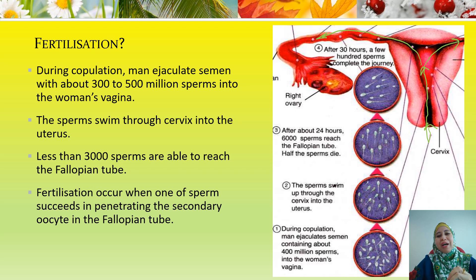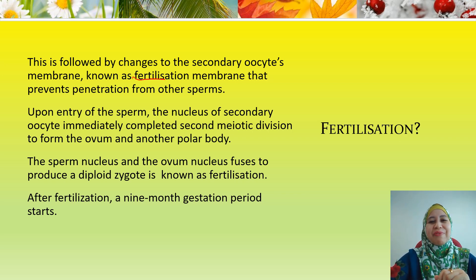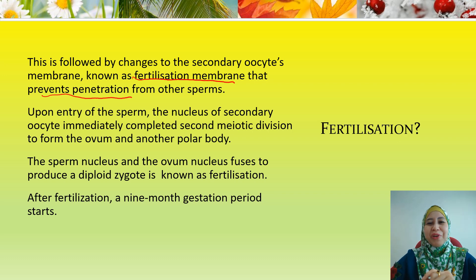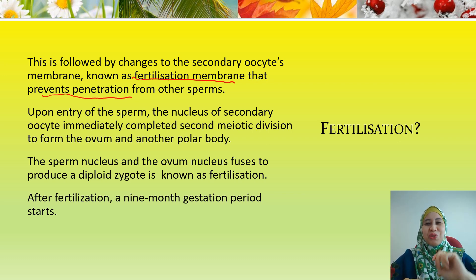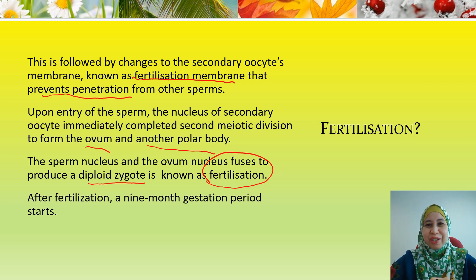Fertilization occurs when one of the sperm is able to penetrate the secondary oocyte in the fallopian tube. Once the sperm penetrates the secondary oocyte, a fertilization membrane forms to prevent penetration by other sperm. The nucleus of the secondary oocyte immediately completes the second meiosis division to form an ovum and another polar body. The sperm nucleus and the ovum nucleus fuse together to form a diploid zygote — that process is known as fertilization. After fertilization, a 9-month gestation period, the pregnancy period, will start.